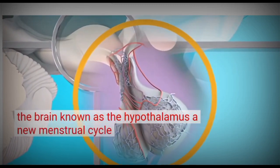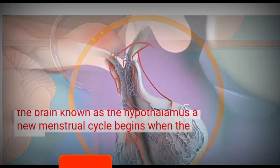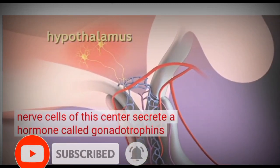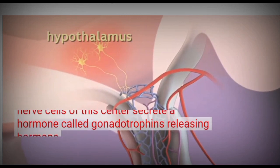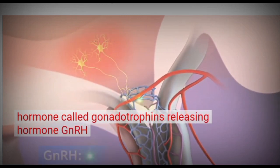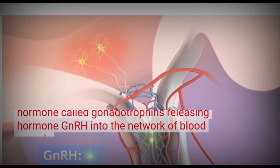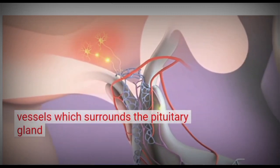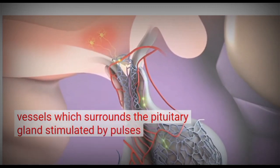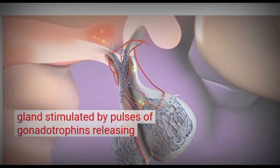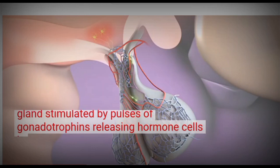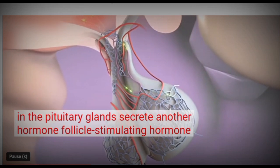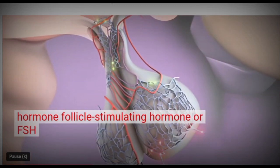A new menstrual cycle begins when the nerve cells of this centre secrete a hormone called gonadotropin-releasing hormone, GnRH, into the network of blood vessels which surrounds the pituitary gland. Stimulated by pulses of GnRH, cells in the pituitary gland secrete another hormone, follicle-stimulating hormone or FSH.